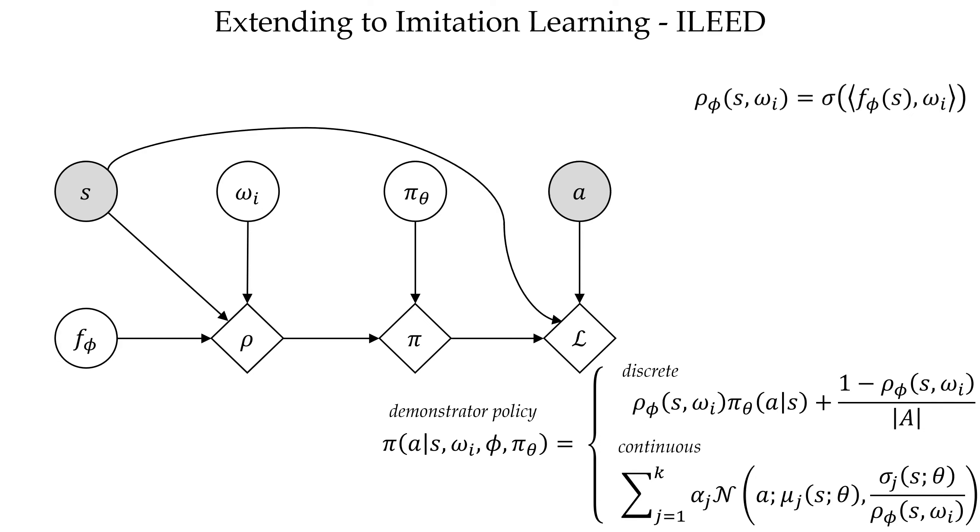Finally, to construct our loss function, we compute the log likelihood of our data, given the model and latent parameters, back-propagating through our loss to derive our optimal policy, as well as the expertise levels and embedding.